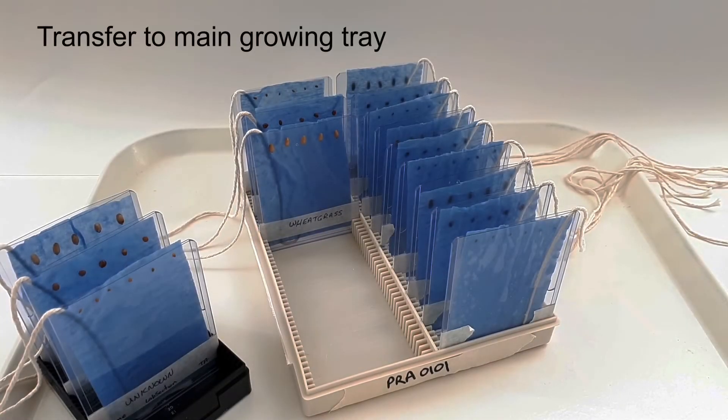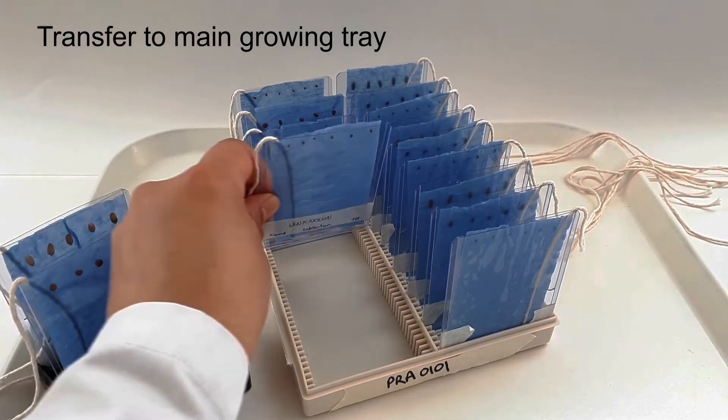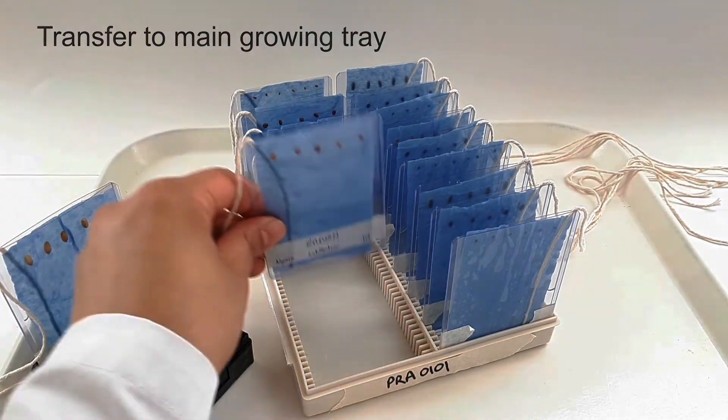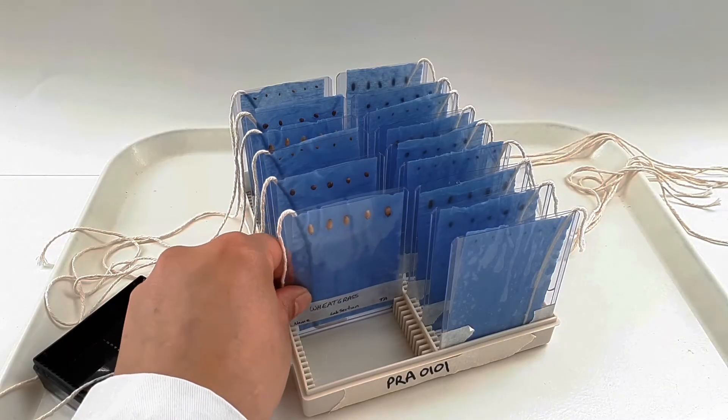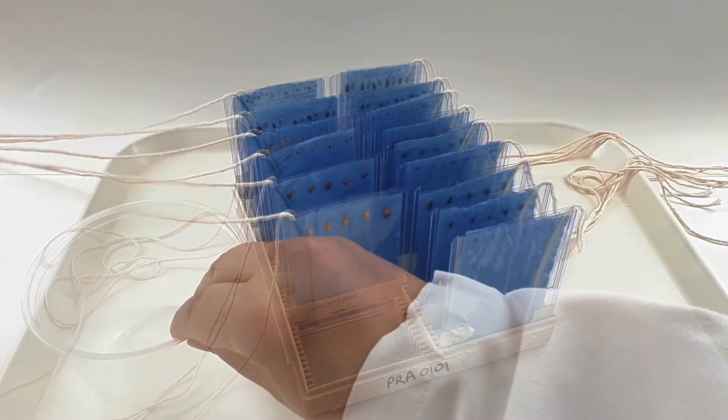Your plant pockets are ready. Place them into the main tray for your lab section. The pockets should be placed four to five spaces apart, with the strings positioned towards the sides of the tray.